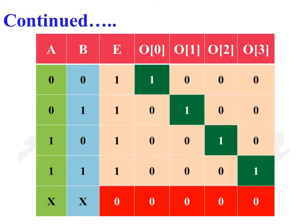This is the truth table of the 2 to 4 decoder. When the enable input is equal to 1, one of the 4 output lines will be set as logic 1 and the rest of the 3 output lines will be logic 0. When the enable input is equal to 0, irrespective of the logic values at A and B, all outputs O0, O1, O2, and O3 are set as logic 0.